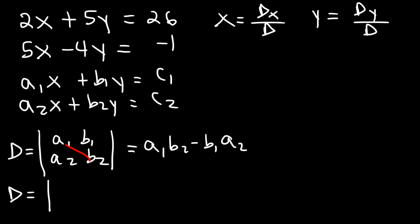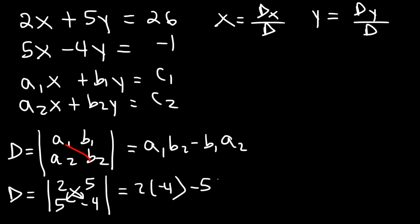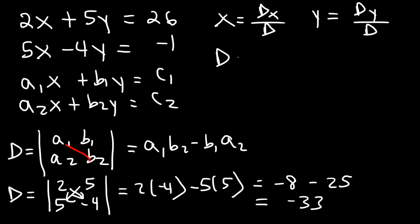So a1 is 2, a2 is 5, b1 is 5, b2 is negative 4. So it's going to be 2 times negative 4, minus 5 times 5. Now 2 times negative 4 is negative 8. 5 times 5 is 25, and negative 8 minus 25 is negative 33. So determinant d is negative 33.